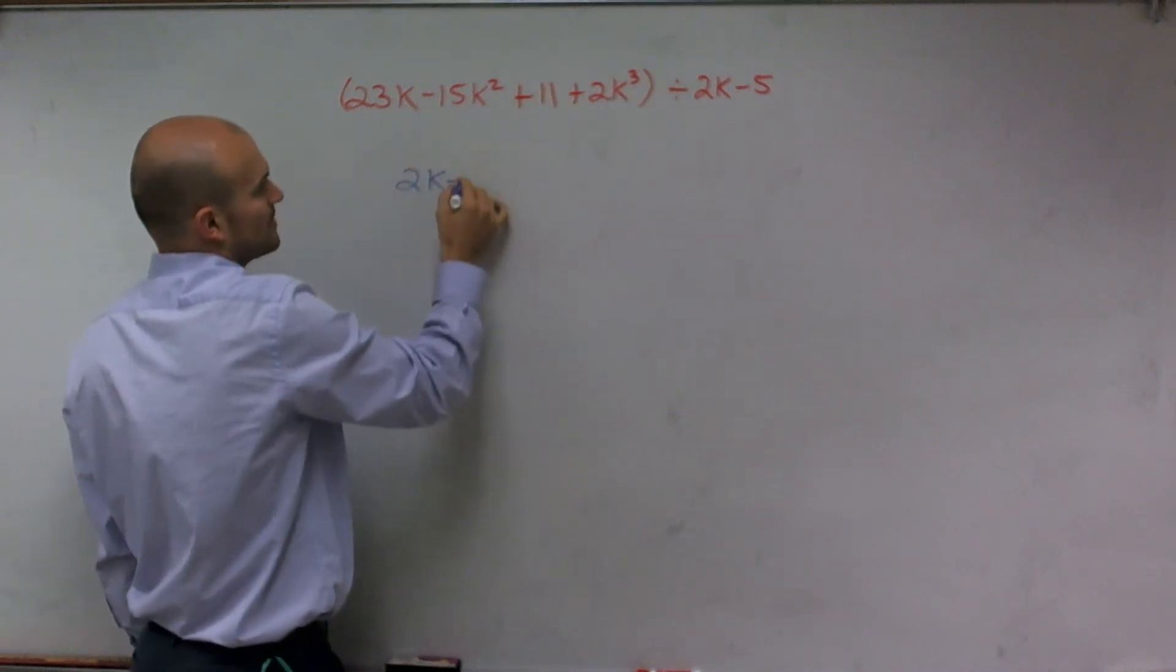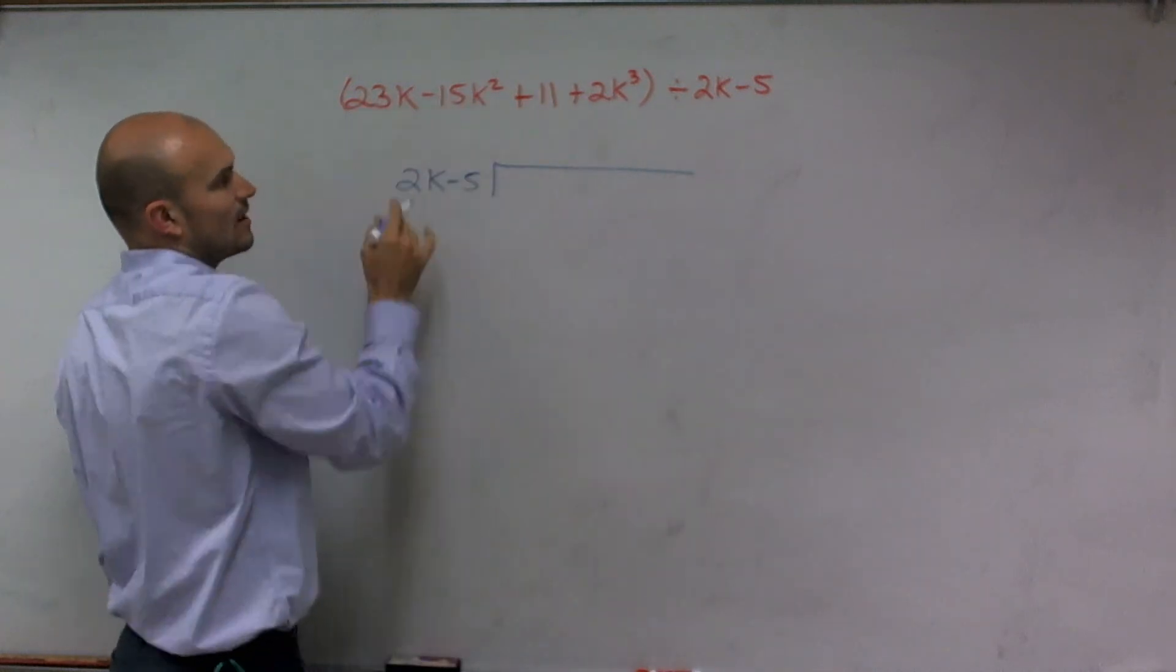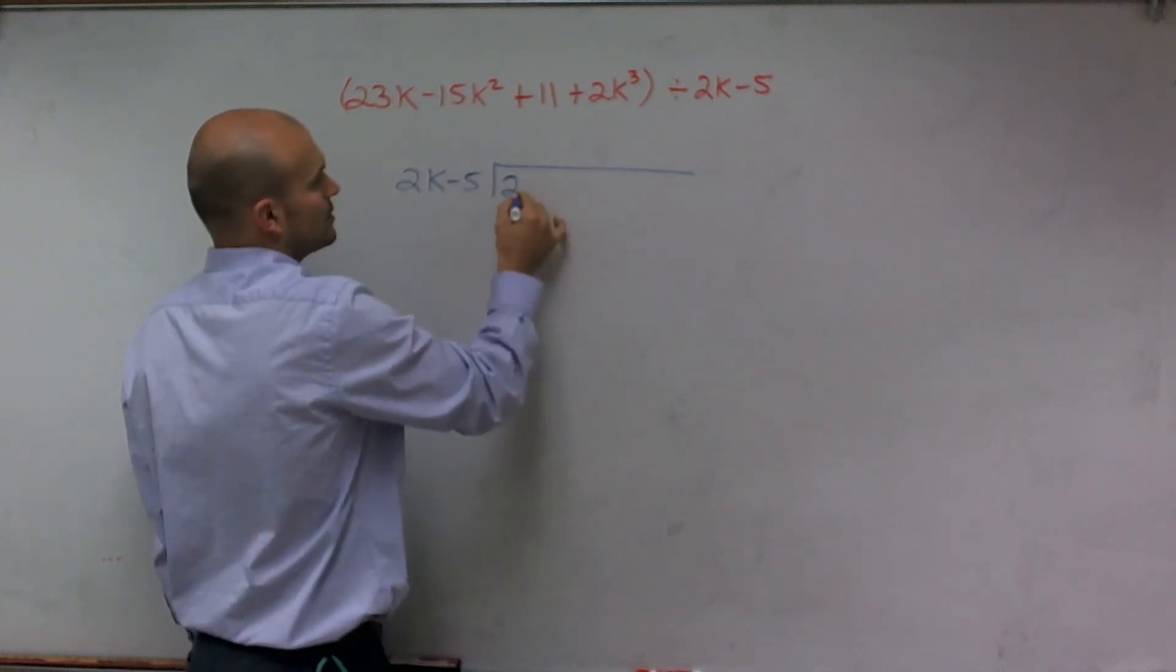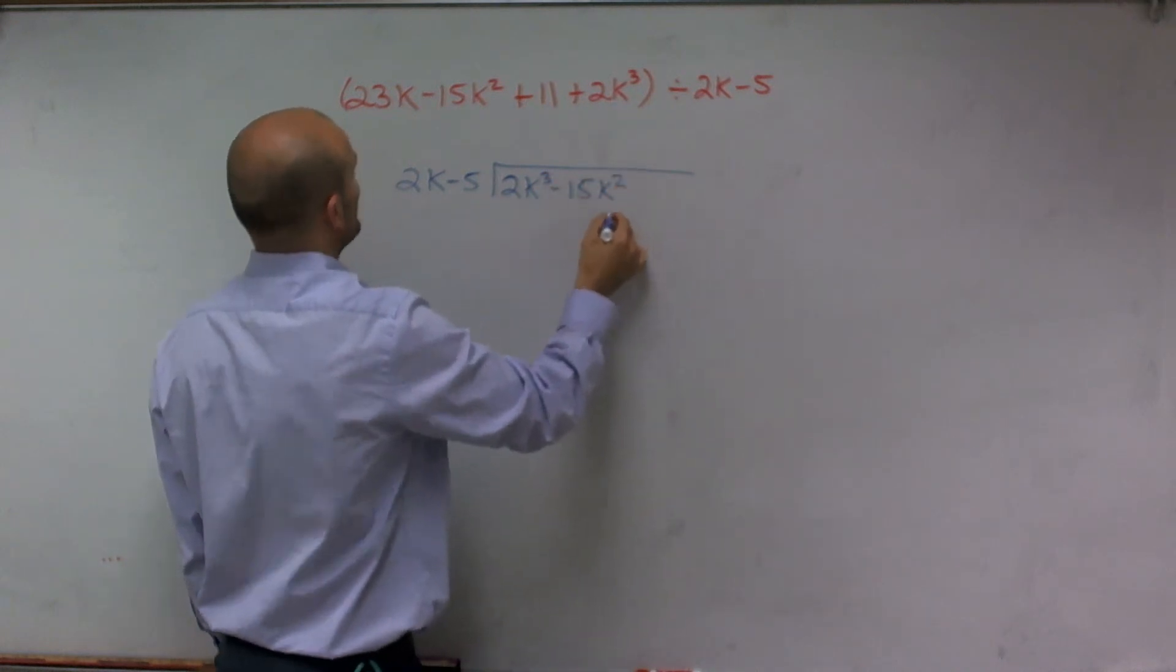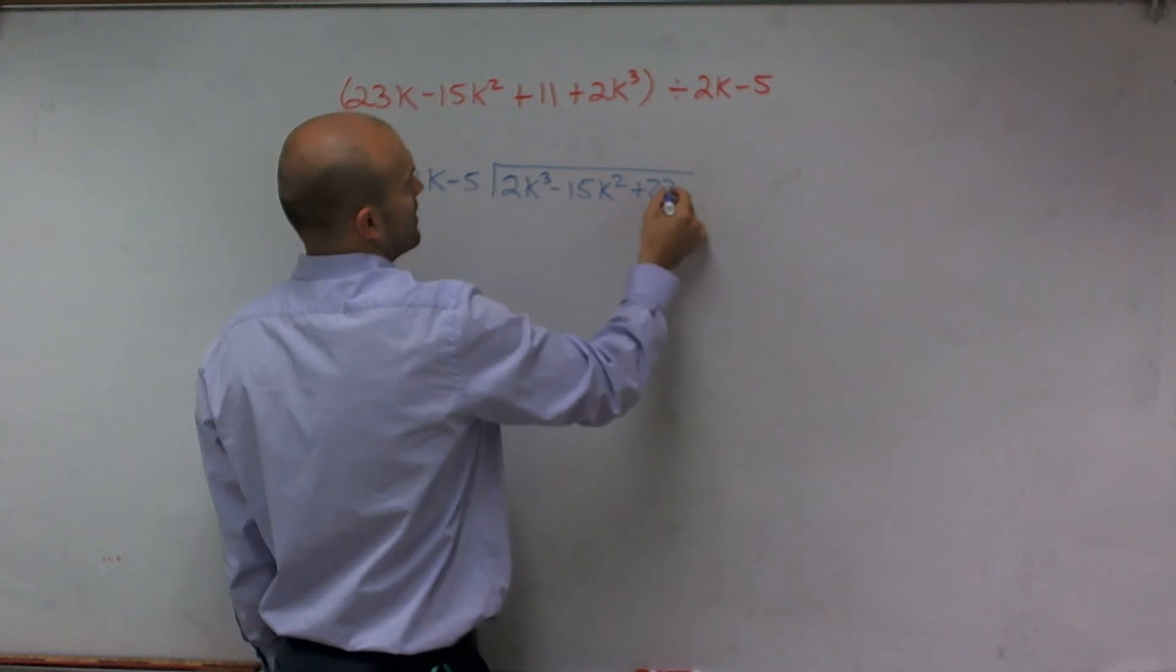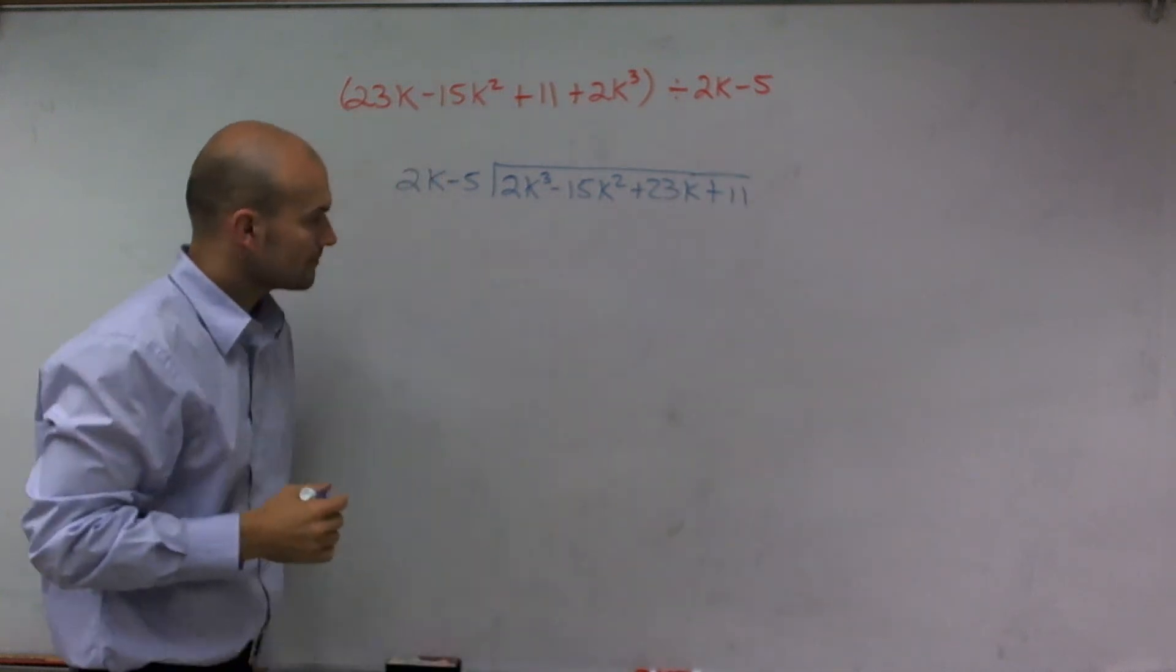So I'll have 2k minus 5 dividing into, and let's write this now in descending order. So 2k cubed minus 15k squared plus 23k plus 11.